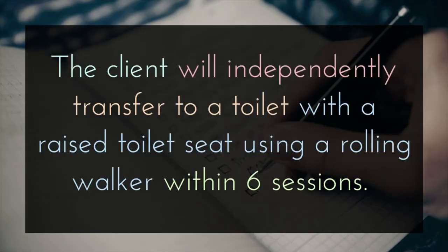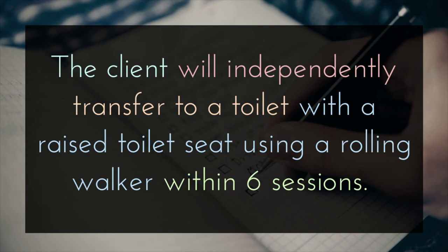For this goal: 'The client will independently transfer to a toilet with a raised toilet seat using a rolling walker within six sessions.' What I wanted to highlight is that COAST doesn't always have to be in the order C-O-A-S-T — you can change the parts around a little bit, but you'll see that all the necessary parts are here. The client is identified, the occupation is identified meaning they will transfer to a toilet, the assistance level is highlighted which is that they will do this independently, the specific condition is they're using a rolling walker, and you could also argue that a raised toilet seat is a specific condition, with within six sessions being the timeline.